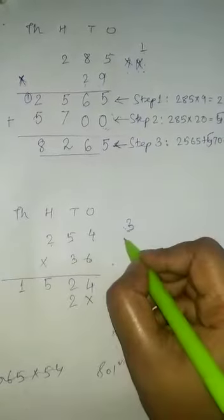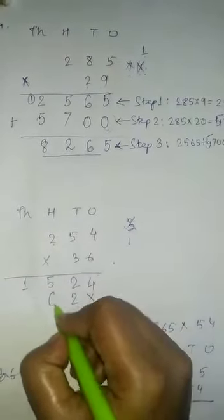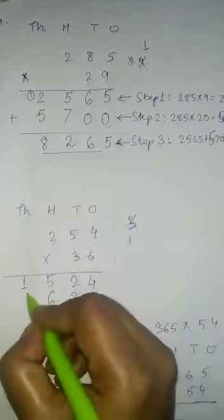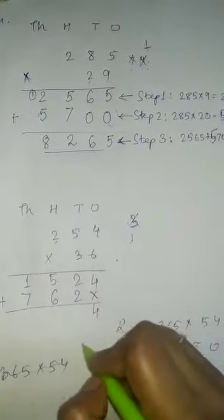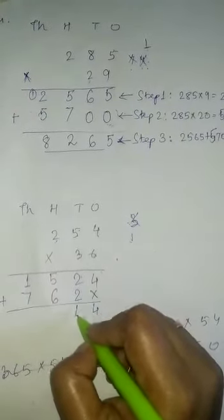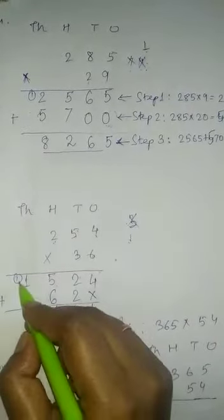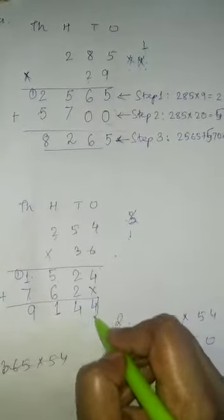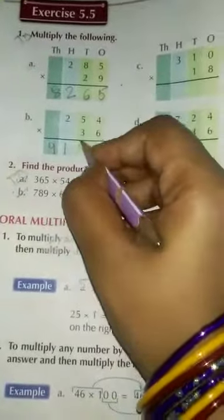3 fours are 12 — 1 is carried over. 3 fives are 15, plus 1 is 16 — 1 is carried over. 3 twos are 6, plus 1 is 7. Now we add: 4 is the units digit. 2 plus 2 is 4. 5 plus 6 is 11 — carry 1. 1 plus 1 is 2, plus 7 is 9. So after multiplication, the answer is 9144. We will write this answer in the book: 9144.